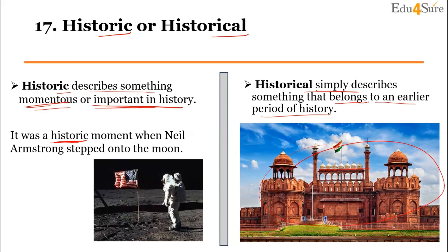The trick to remember: Historic is something momentous or important — associate it with 'all others notice it' since it has no extra suffix. Historical describes things from an earlier period — associate the suffix '-al' with 'all others', meaning general historical things. So important events are 'historic', and things that simply belong to the past are 'historical'.